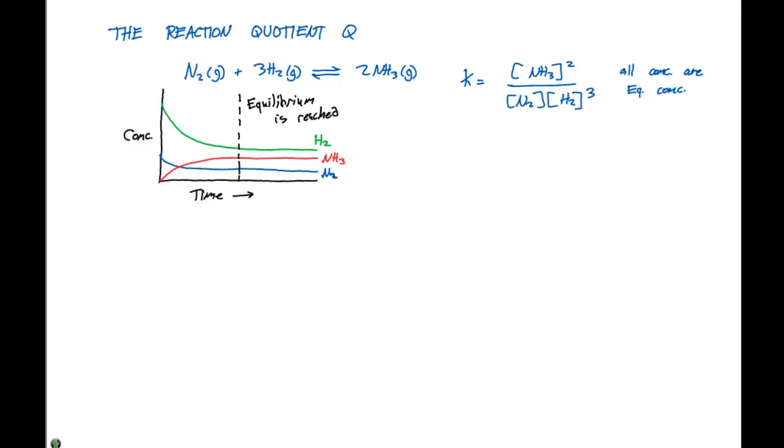So we come up with something called the reaction quotient, which is Q. And Q is set up the same way as the K, where we have the concentration of NH3, that quantity squared, divided by the concentration of N2 times the concentration of H2 to the third power.